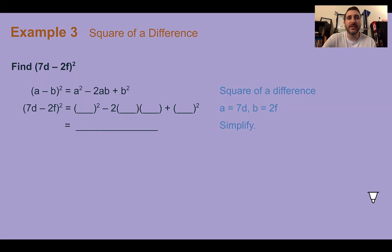Example 3: Square of a difference. Find (7D - 2F)². So I'm going to follow the pattern. (7D)² minus 2 times the two things, and then (2F)². When I do that, I end up with 49D². Again, don't forget to distribute that exponent, 7 squared and D squared. 7 times 2 times 2 is 28, and it was minus because that's the pattern. And then 2 times 2 is 4 and F².